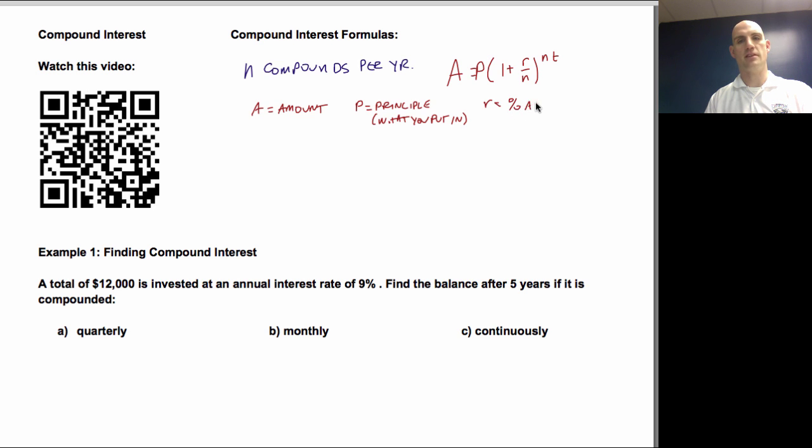Rate is the percent as a decimal. And t is time. So for example, if it's five years and it's compounded monthly, so it'd be five years times 12 would be 60, would be the number that goes up here. We'll talk about that in just a minute. So that's the first one.